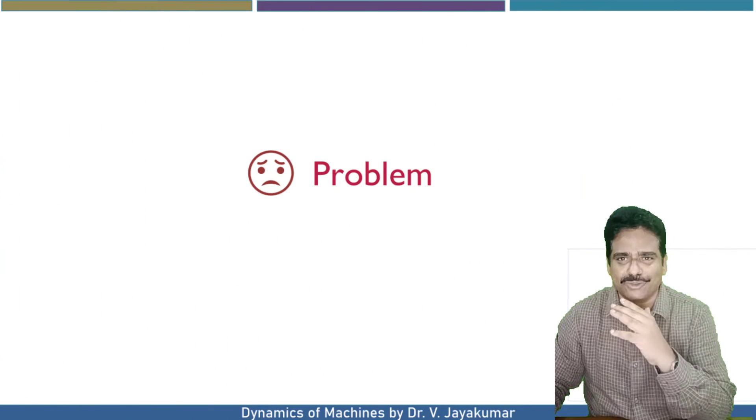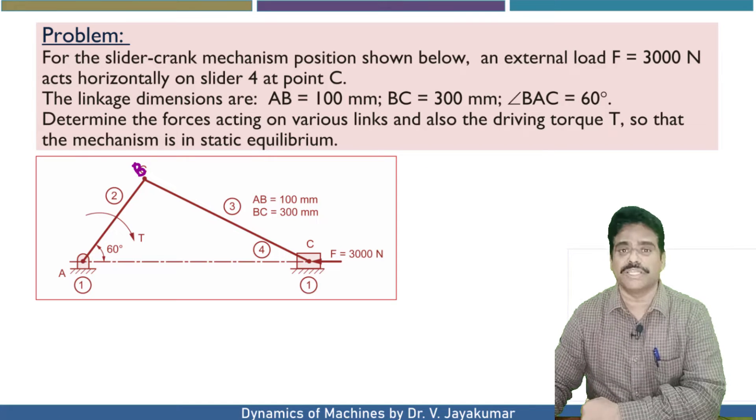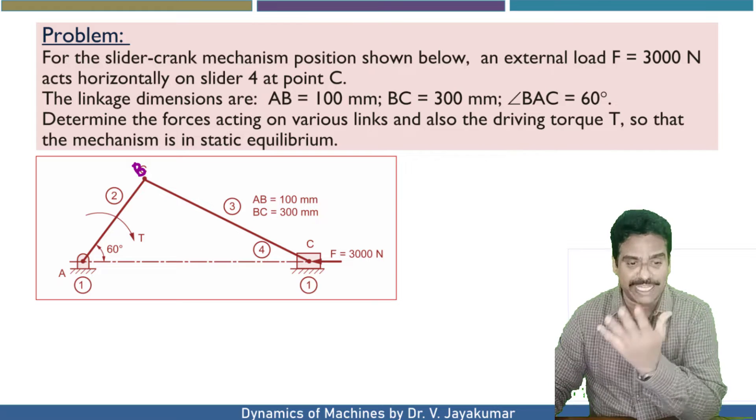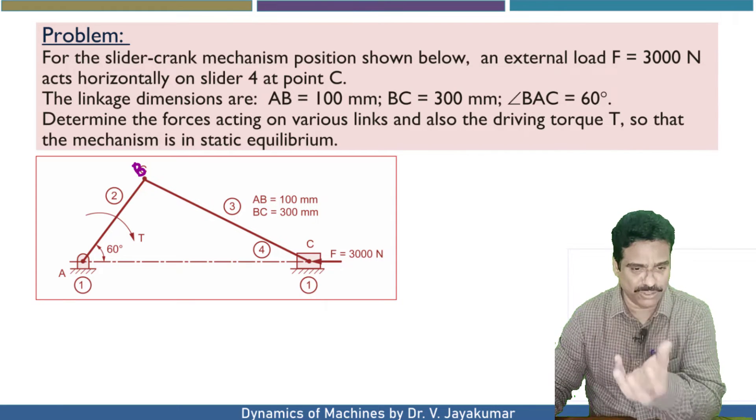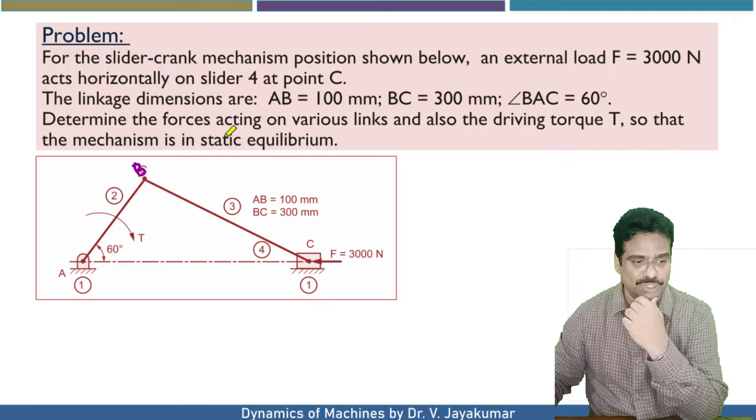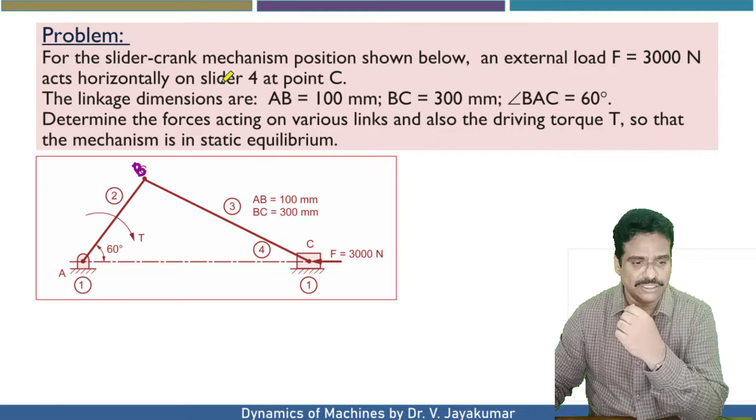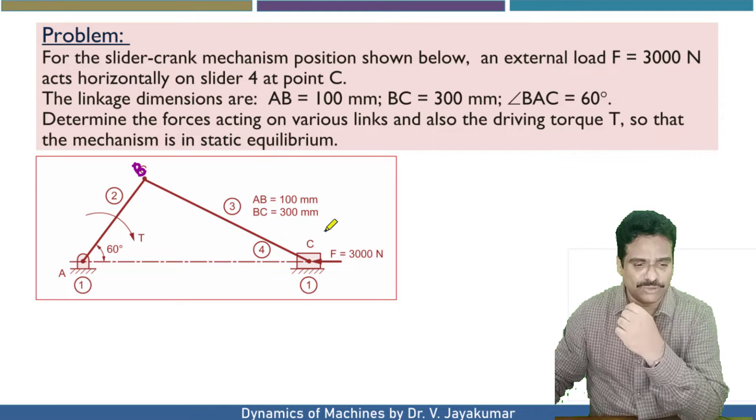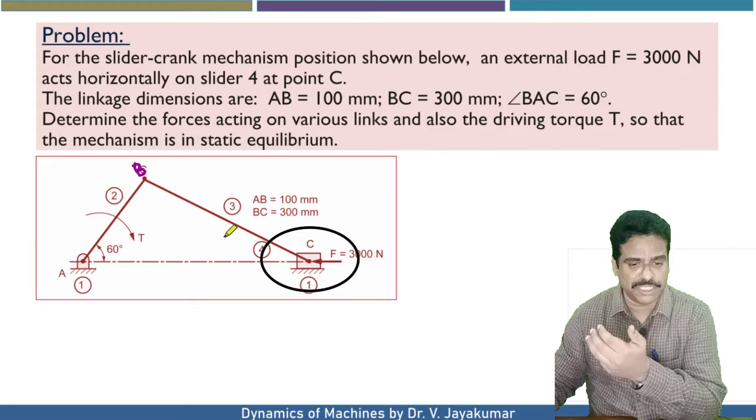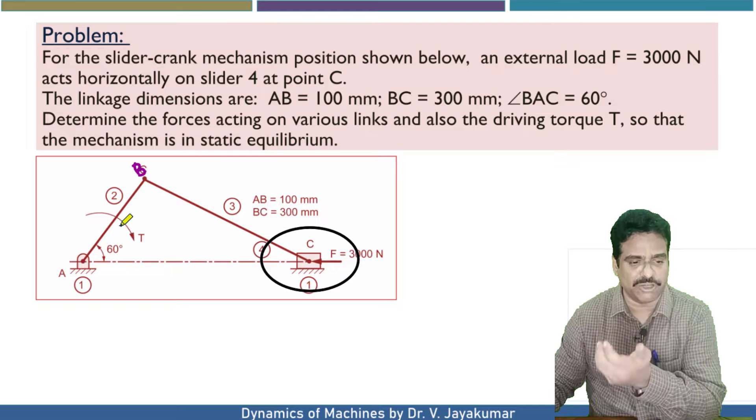Let us get on with the problem. This is the given data. Let us read the problem carefully. For the slider crank mechanism position shown below, an external load F equal to 3000 Newton acts horizontally on slider 4. The linkage dimensions are given: AB, BC, and angle BAC are given.